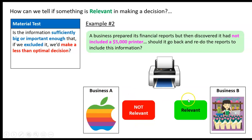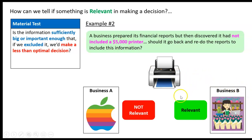Business B — the florist — we could argue that the $5,000 printer is relevant. Why? It's not a big business. It probably only has tens of thousands of dollars of assets, and this $5,000 printer probably represents a significant portion of its assets. We need to make good decisions, and we need this financial information included in our reports in order to do so. So, that is relevant to Business B.